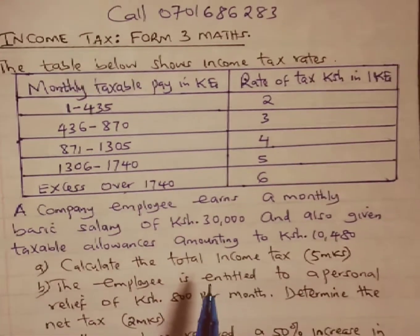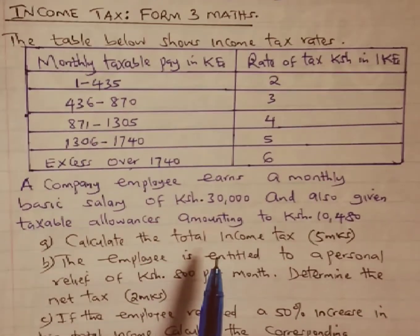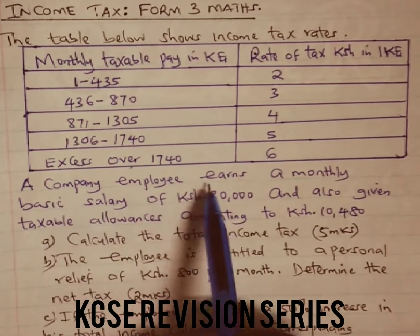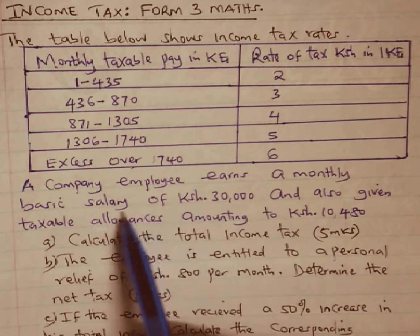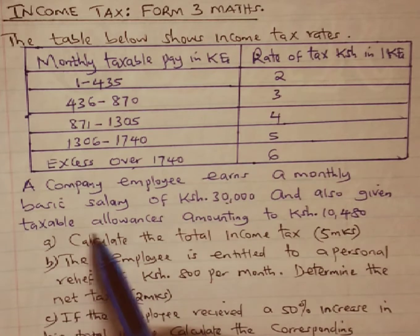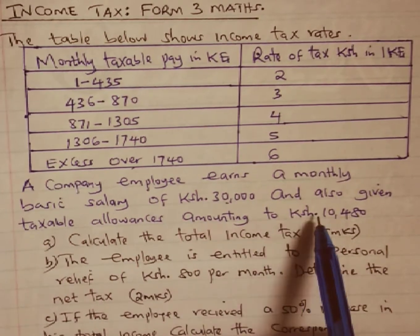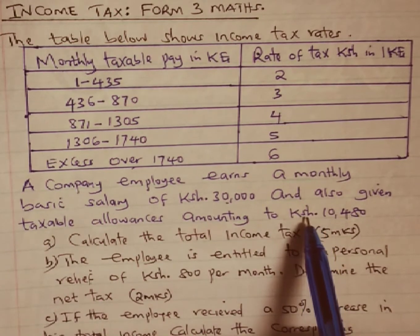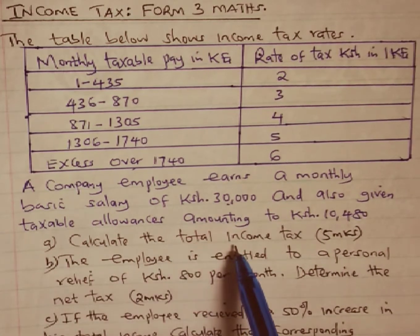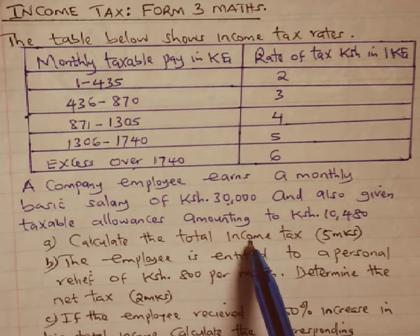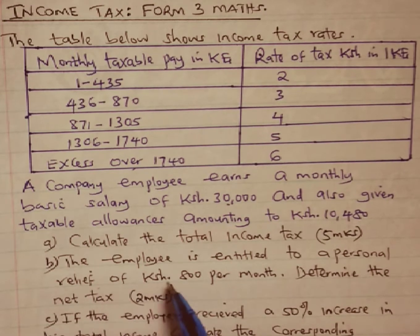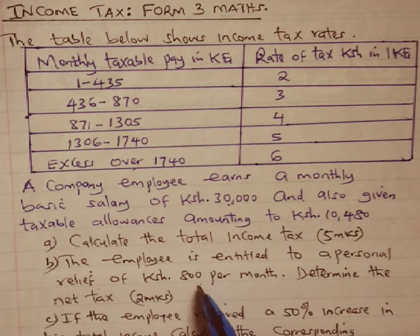The information given relates to a company employee who earns a monthly basic salary of Kenya shillings 30,000 and is also given taxable allowances amounting to Kenya shillings 10,480. Part (a) asks us to calculate the total income tax, that is the gross tax. The employee is entitled to a personal relief of Kenya shillings 800 per month.